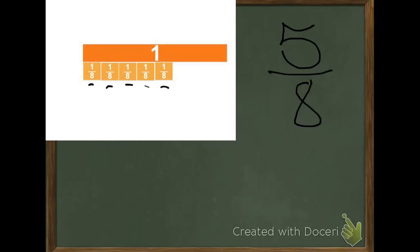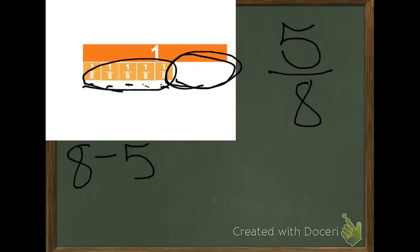If I wanted to know how much wasn't covered, how much I still had left to cover, I could very easily figure it out. If five-eighths are covered, how many would be left? Well, I know my total is eight. I take away the five that I already have covered. And I see that I would need three-eighths more to cover that up.